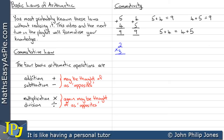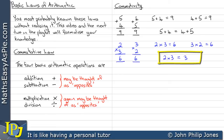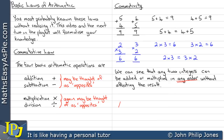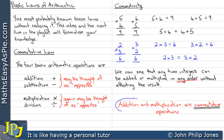Two multiplied by three is six. Three multiplied by two is six. So two times three equals six and three times two equals six, therefore two times three is the same as three times two. We can see that any two integers can be added or multiplied in any order without affecting the results — addition and multiplication are commutative operations.